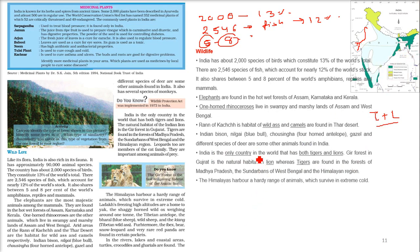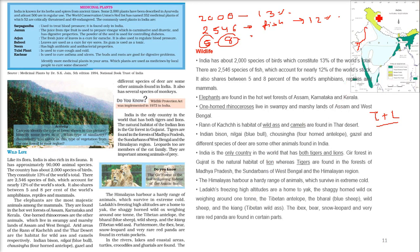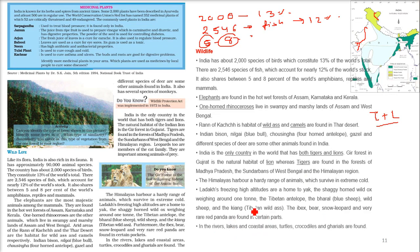India is the only country where you get both tigers and lions together. The Gir Forest is the natural habitat of lions, while tigers are found in forests of Madhya Pradesh, Sundarbans of West Bengal, and the Himalayan region. The Himalayas harbor a hardy range of animals including yak — shaggy horned wild ox that may weigh up to 1 tonne — Tibetan antelope, bharal (blue sheep), wild sheep, kiang (Tibetan wild ass), ibex, bear, snow leopard, and sometimes red panda.